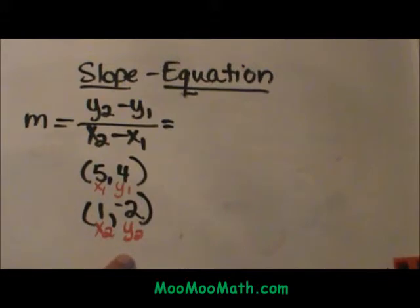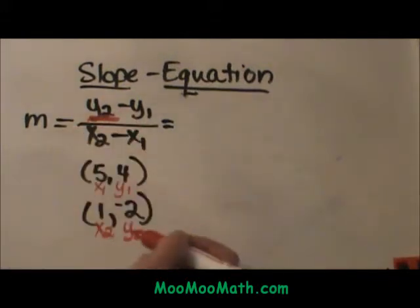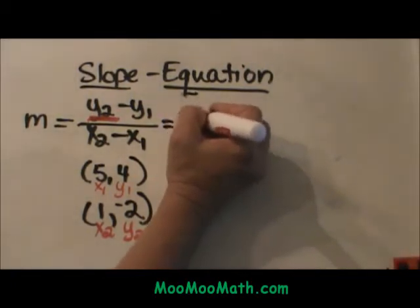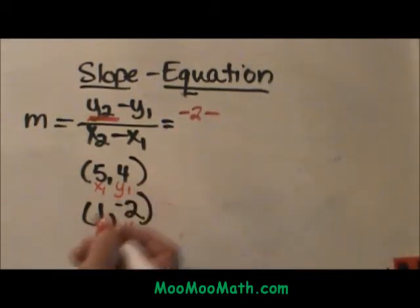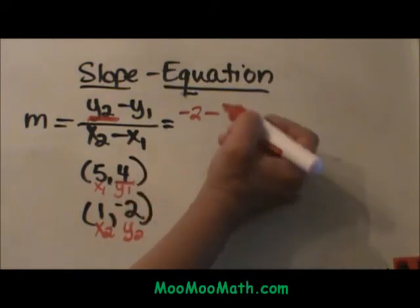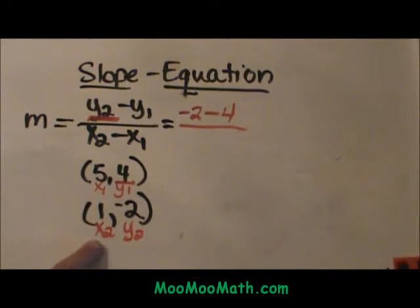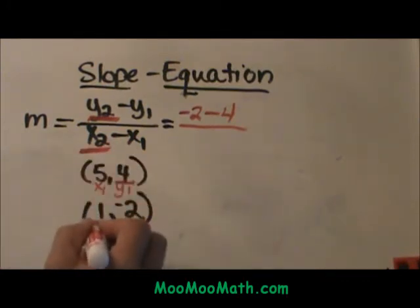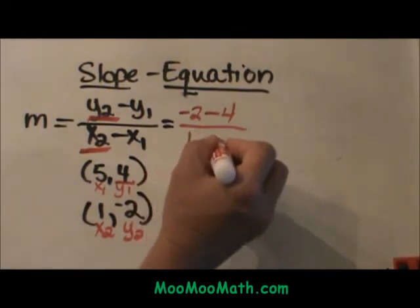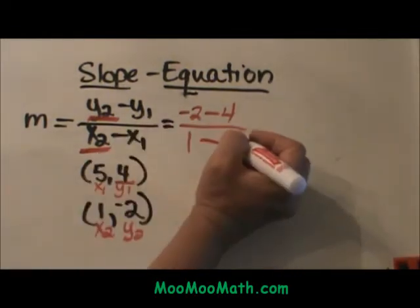Now I am going to plug it into the equation. I am going to take my y2 which is negative 2 and subtract my y1 or my 4. Then I am going to do the same thing with the x coordinates. My x2 is positive 1 minus my x1 is positive 5.